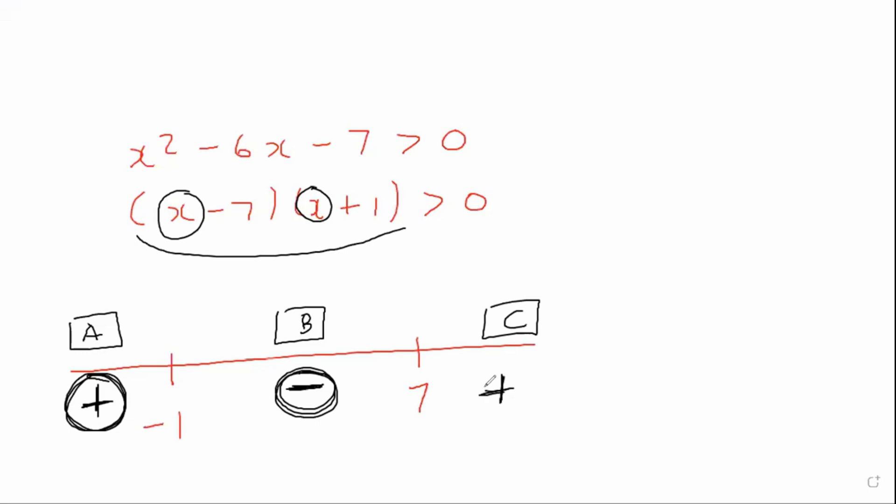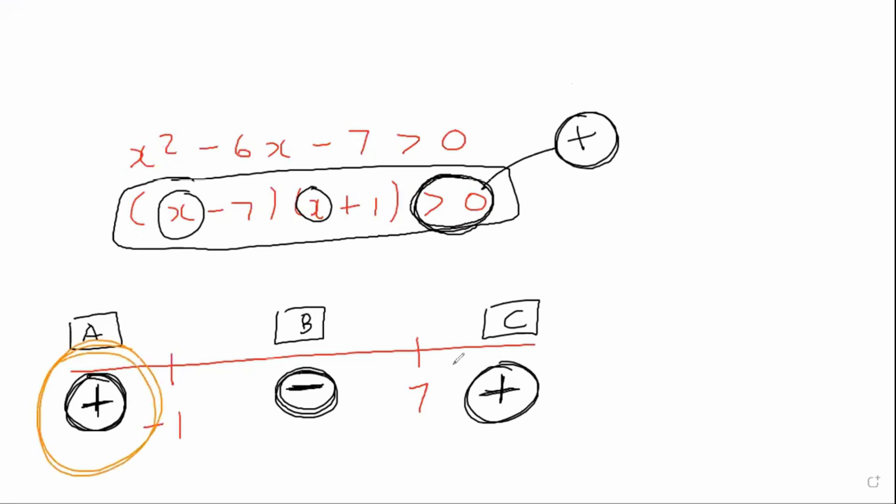So now what we can do is we have to go back to the question. And they're wanting us to find out where is this bigger than 0. What is bigger than 0 mean? Bigger than 0 means positive. If something is bigger than 0, then it means that it is positive. And so where would it be positive? We can see that the positives are this interval over here and this interval over here. So we will say that the answer is anything where x is smaller than minus 1, or x is bigger than 7.